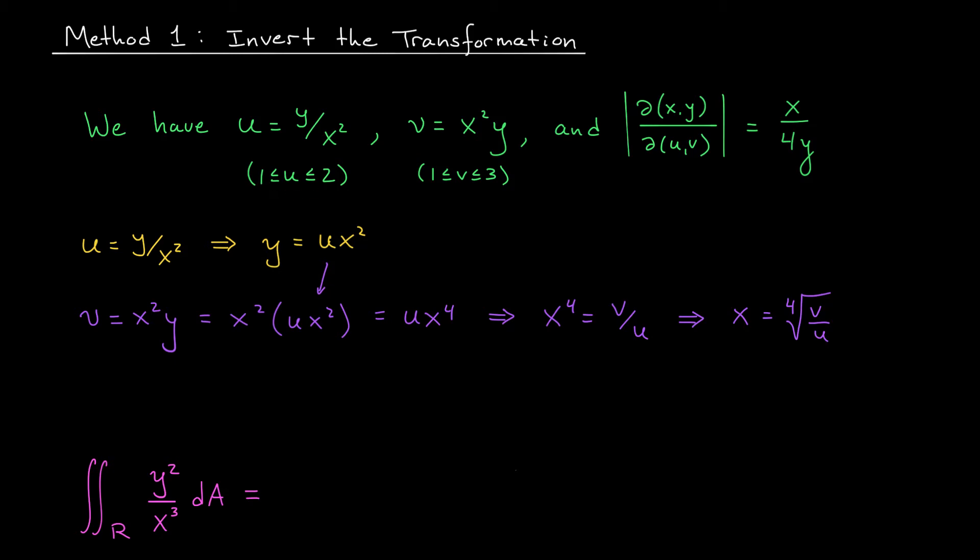Now you might also be thinking, oh, but Zach, what about taking the 4th root? If we take the 4th root, shouldn't we have plus or minus here? Well, again, not quite. Remember from our first slide that our region R lives in the first quadrant. So x is going to be positive. When we take the 4th root, we only get the positive root, not plus or minus.